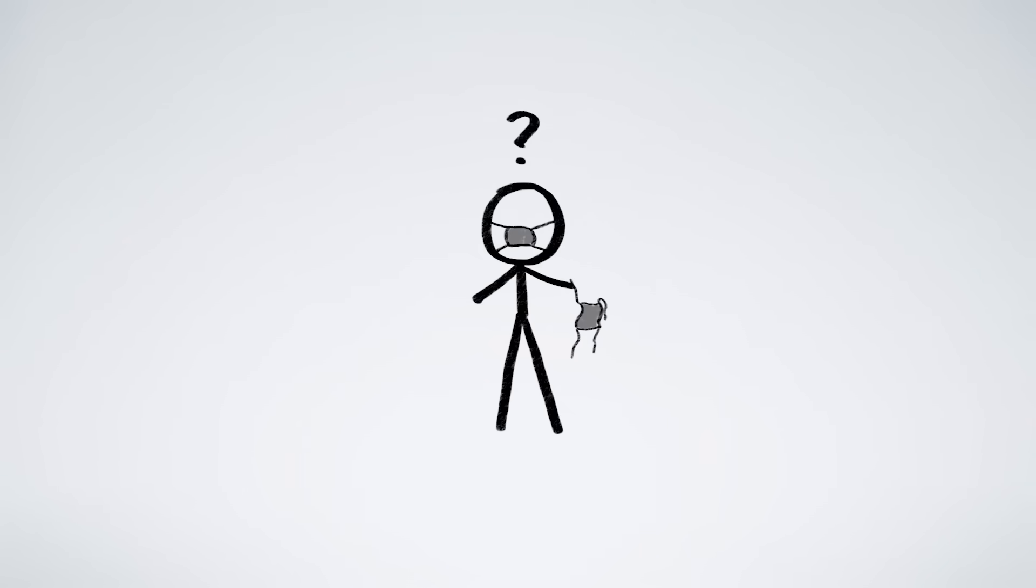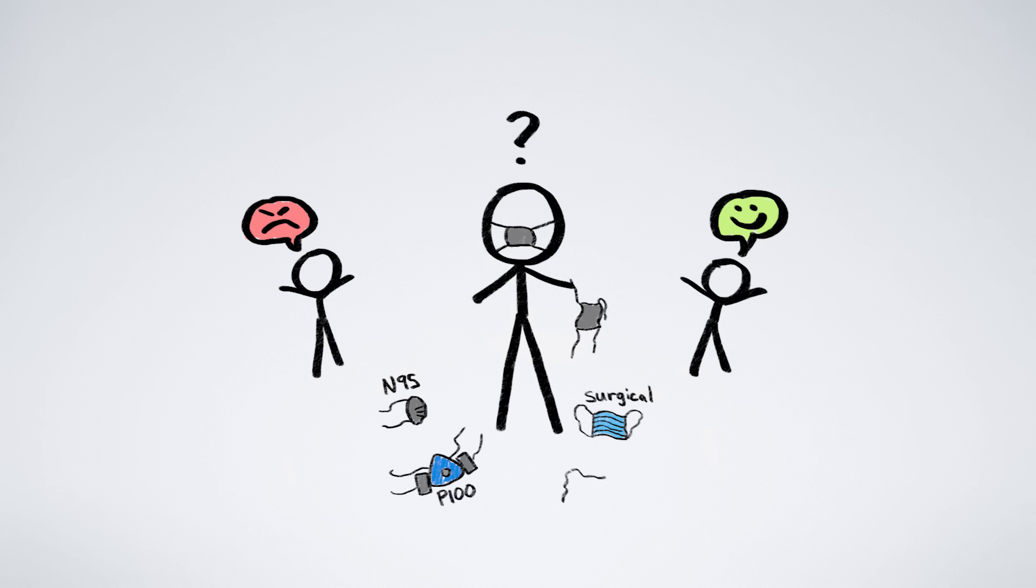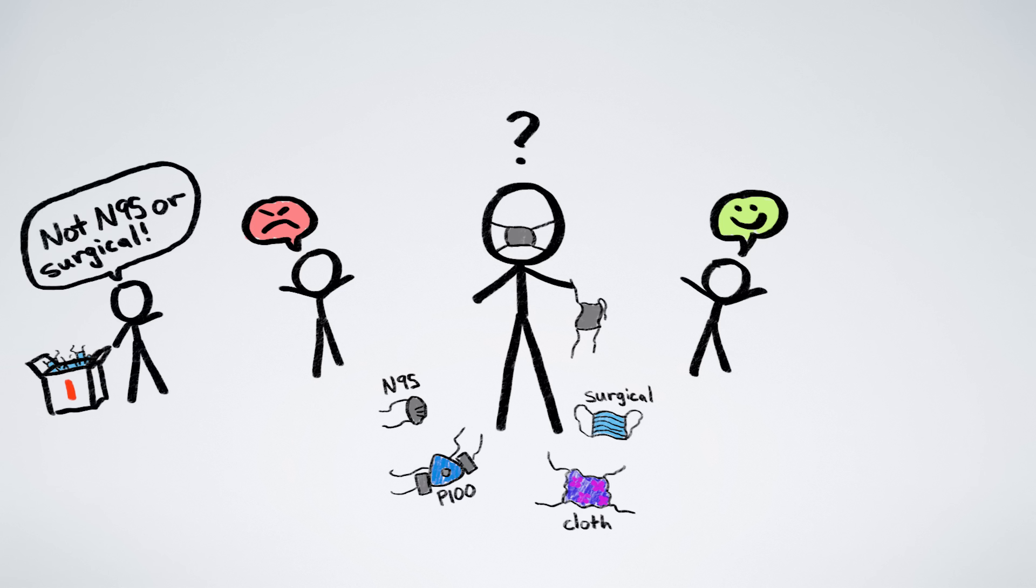Mask-wearing and COVID-19 is complicated, not just because it's become politically fraught, not just because there are many different kinds of masks of varying levels of effectiveness, not just because there's been a shortage of medical-grade masks so authorities were trying to convince the public not to buy them, not just because there's tons of malicious or simply misguided information flying around.